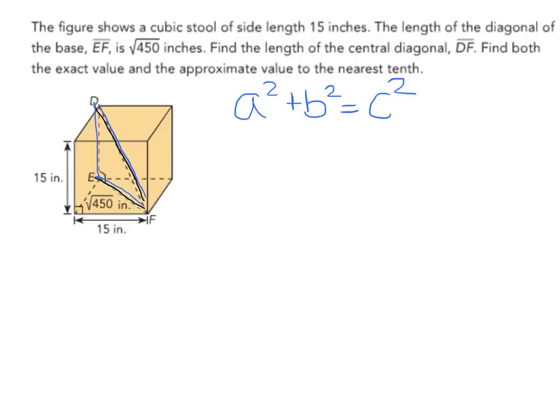We are looking for the hypotenuse, and we know we're looking for that side length DF because it's telling us that, and we know that it is the hypotenuse because it's across from the right angle.